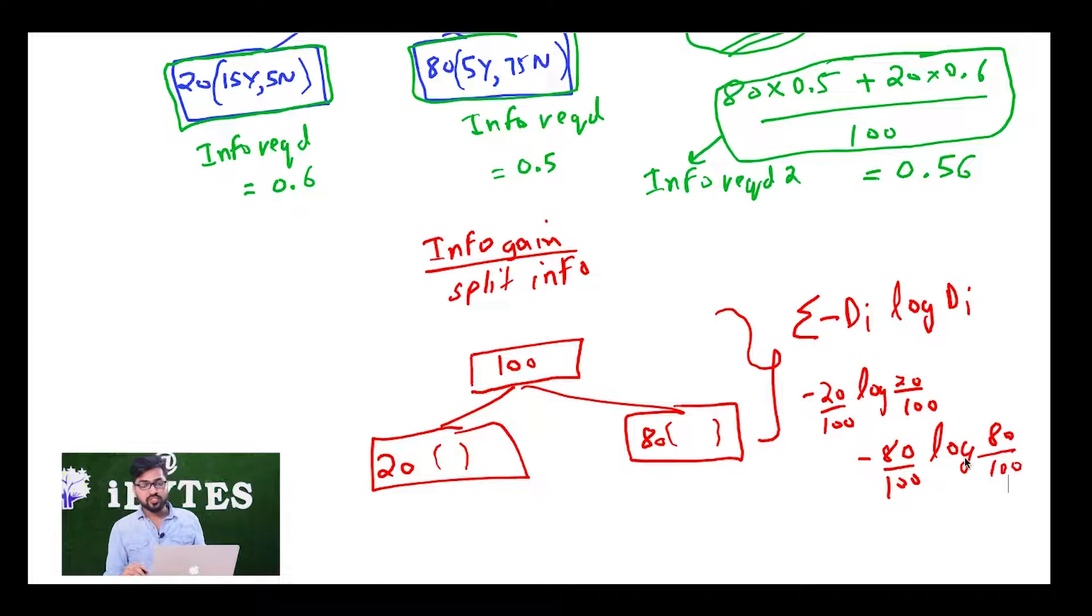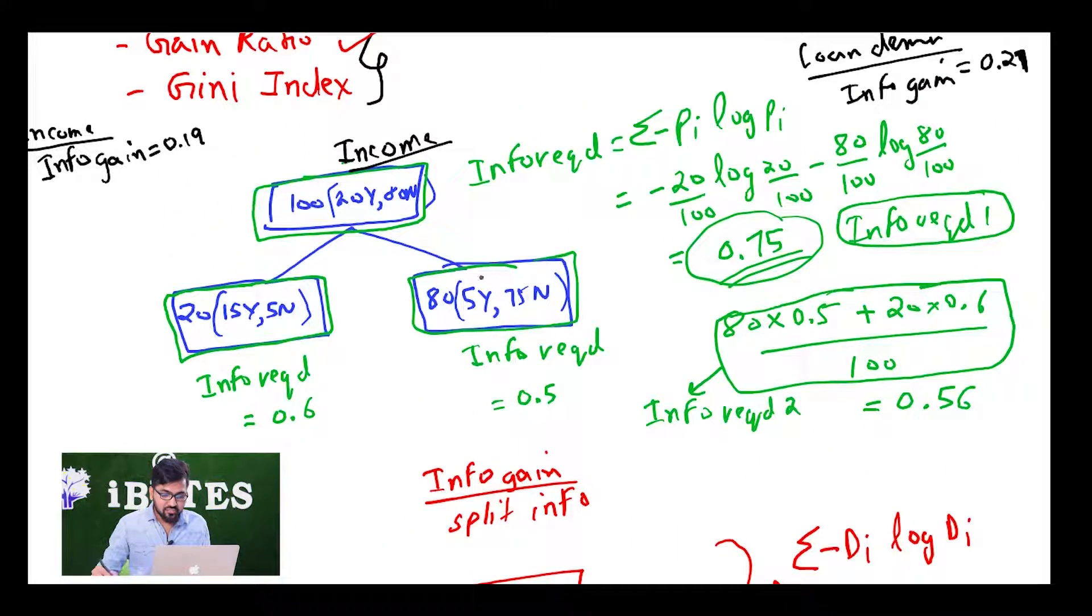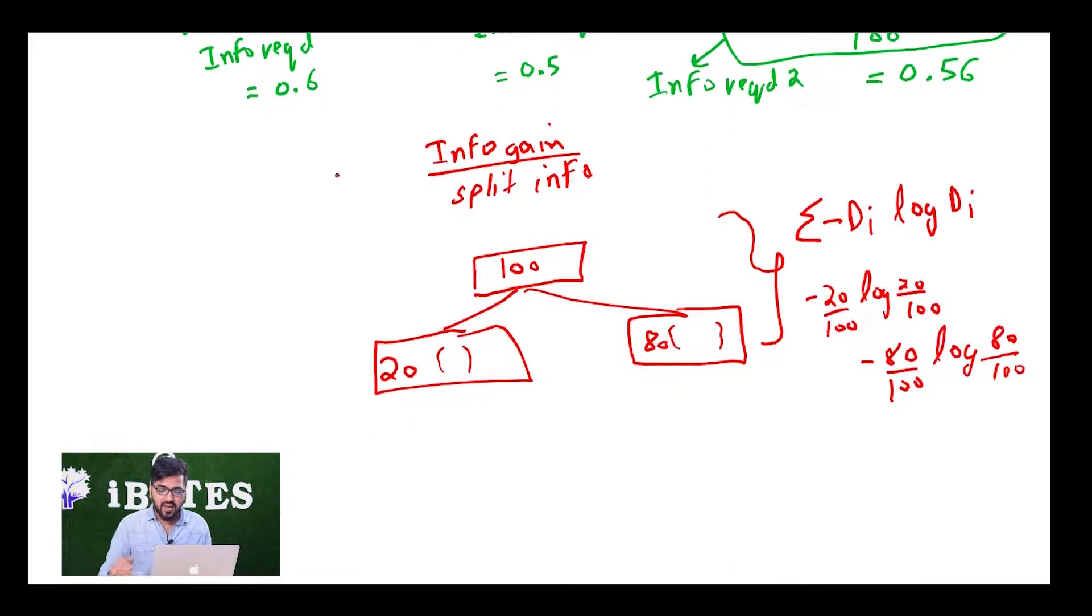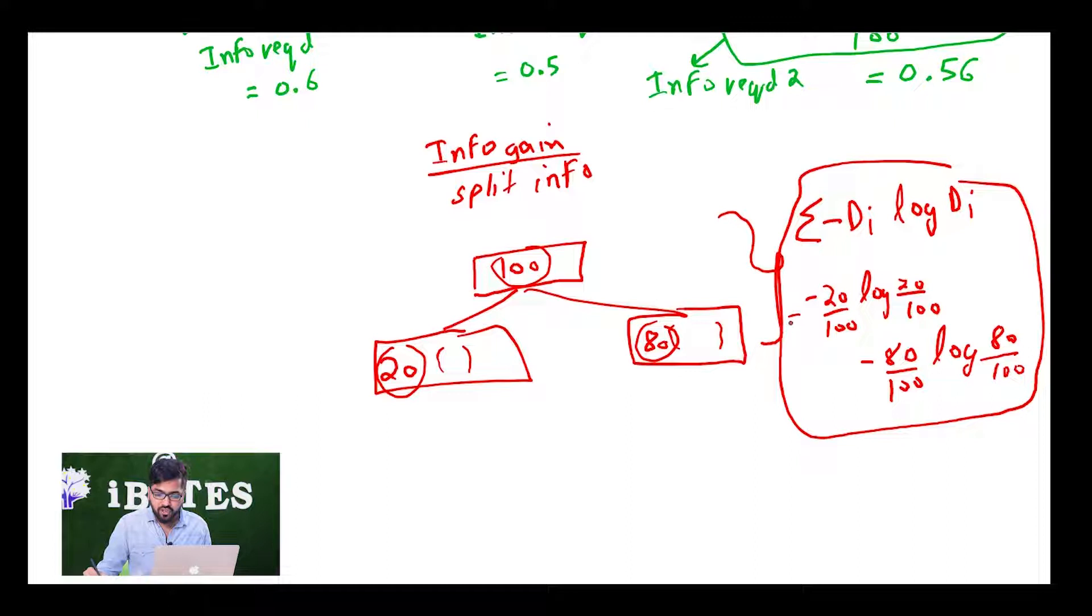Just do not confuse it with information gain. In the information gain, it was defined for a particular block. By chance the values that we are taking are the same, but information required was for a particular block and split info is for this split. So this 20 upon 100 and 80 by 100 - this is going to be my split info for the case when we were splitting on income.